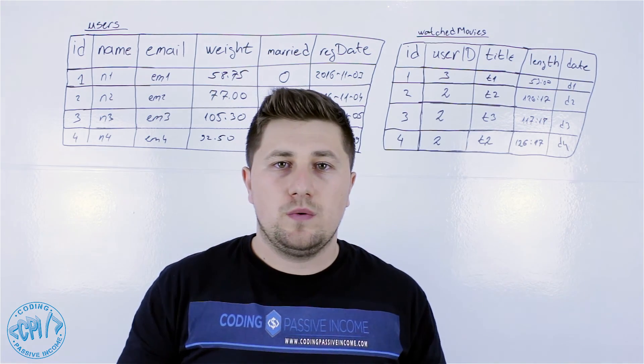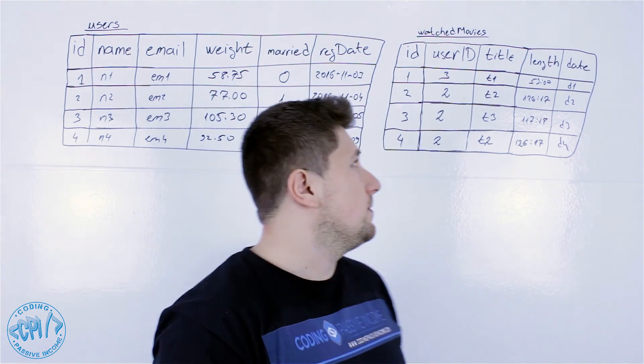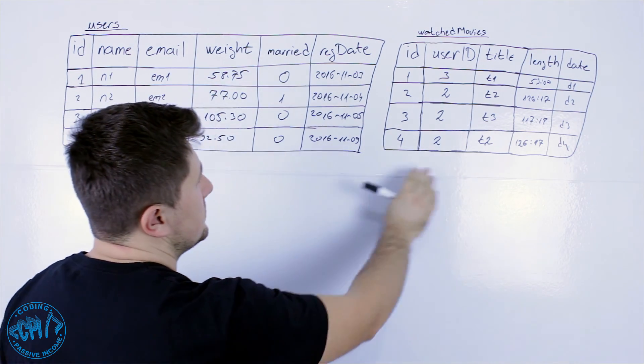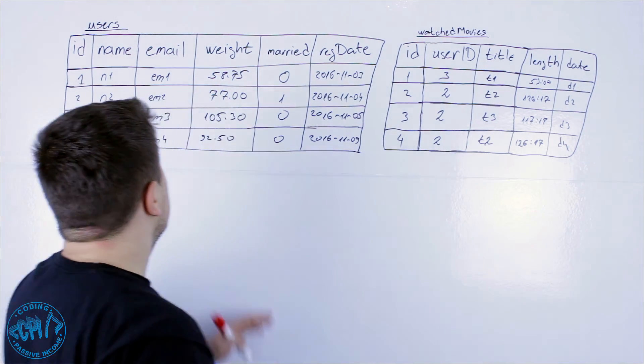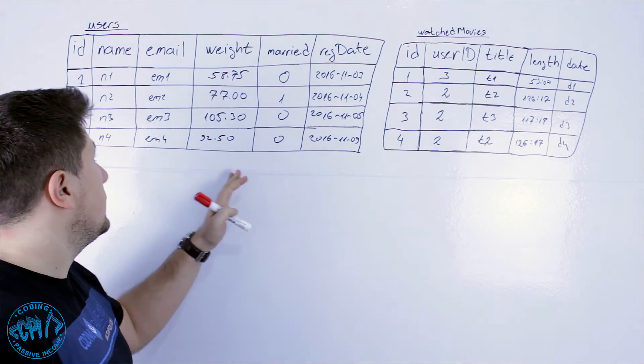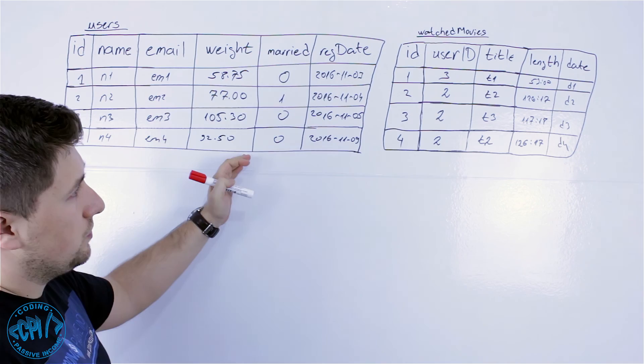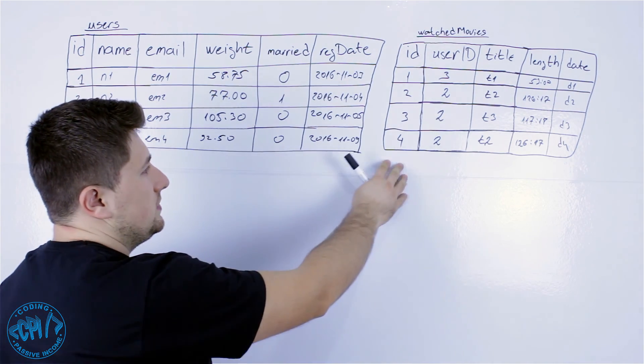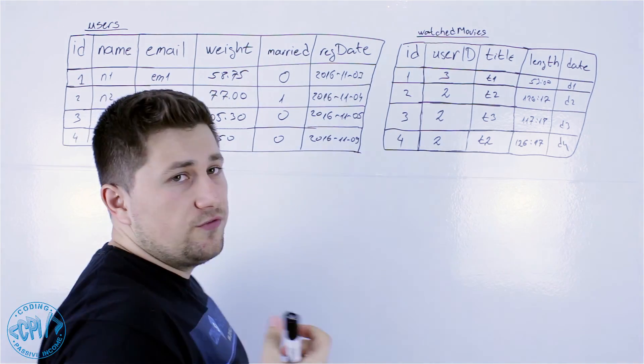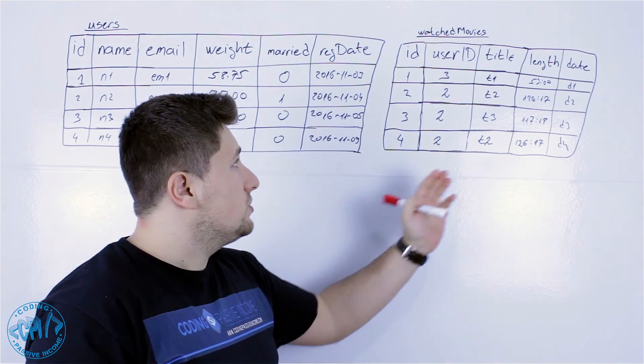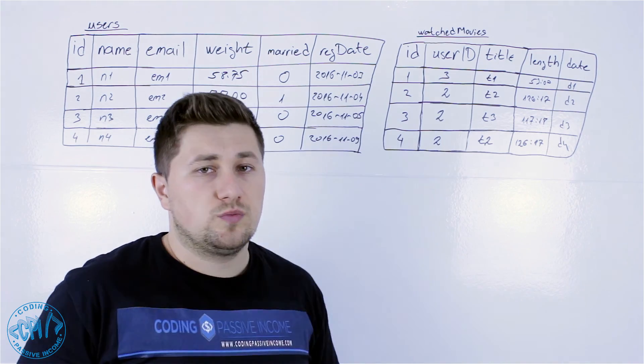So now I'm here at my whiteboard and I want to show you one example. Let's say that we have two tables. This one is named users and this one is watched movies. We can see that in the users table we have some basic data about users that are registered on our website. And here we have the table that just contains information about movies that those users are watching and also some basic information about those movies.